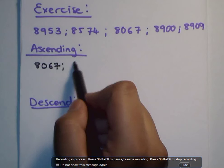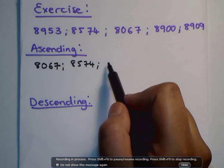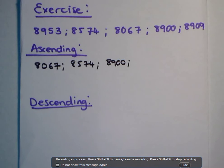So we write it 8574. Then we have 8900. Then we have, what do we have? Did I do this right?